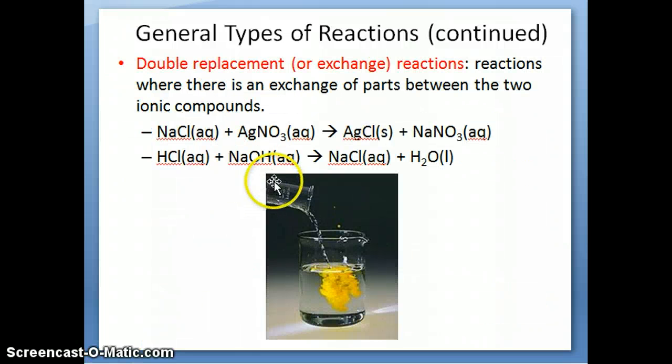So again, magnesium would be ranked higher than titanium because magnesium can displace titanium in a single displacement reaction. The last type of reaction I want to mention here is something called double replacement or exchange reaction. This is a reaction where there's an exchange of parts between two ionic compounds. So either cations are being exchanged among the two ionic compounds, or you can think of the anions as being exchanged.